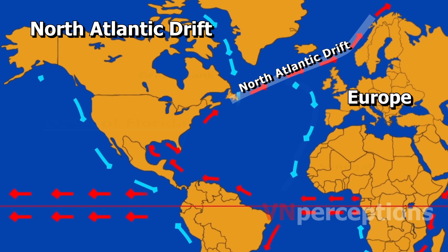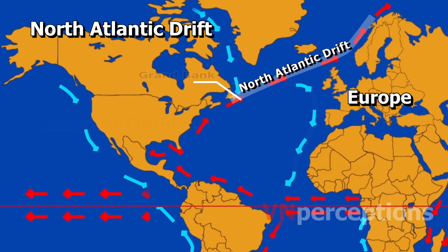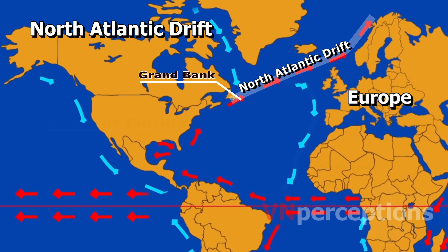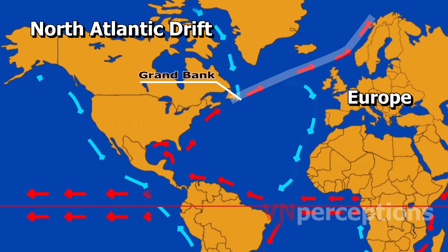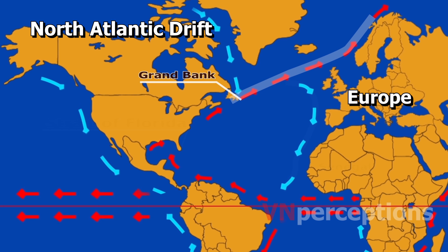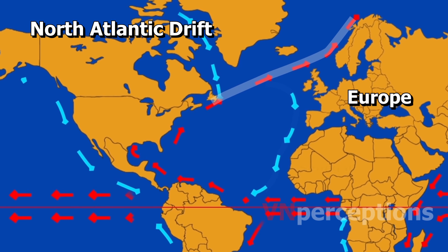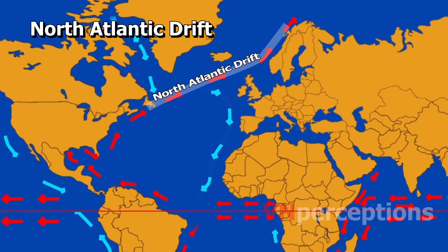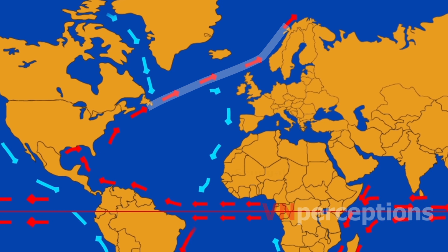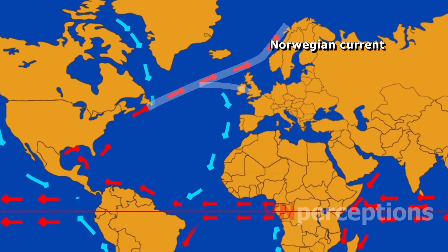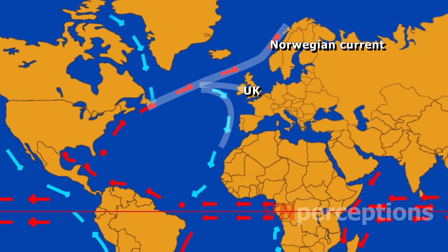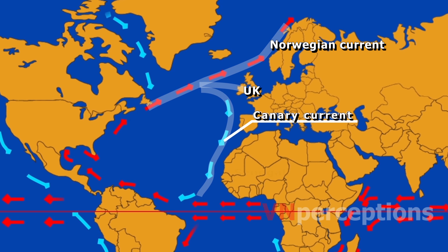The North Atlantic Drift is a warm Atlantic Ocean current which runs from the Grand Banks near Newfoundland to Western Europe. The warm Gulf Stream current is deflected towards the east under the influence of the Westerlies and the rotation of the earth, and reaches Europe as the North Atlantic Drift. It flows in three directions: northward to the Arctic region as the Norwegian Current, eastward to the UK, and southward along the Spanish coast as the cool Canary Current.